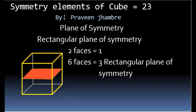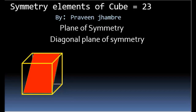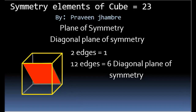Therefore, between six faces there will be three rectangular planes of symmetry. The diagonal plane of symmetry is the diagonal plane between two opposite edges passing through the center. Between two opposite edges there is one diagonal plane of symmetry, so between twelve edges there will be six diagonal planes of symmetry. Total plane of symmetry equals three plus six, which is nine.